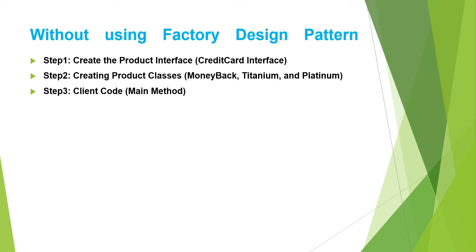We are going to follow three steps. In step one, we will create the product interface — that is the CreditCard interface with the required method signatures, i.e., abstract methods. In step two, we will create the product classes: MoneyBack, Titanium, and Platinum, implementing the CreditCard interface and providing implementation to all the abstract methods. In the final step, in the client code, we will ask the user to select the credit card type and based on that create an instance of one of the three product classes, then call the methods.